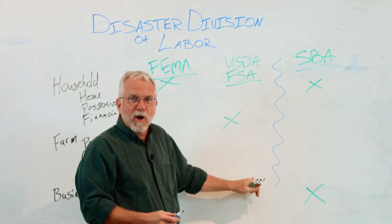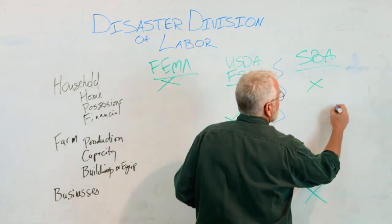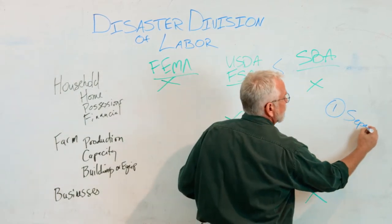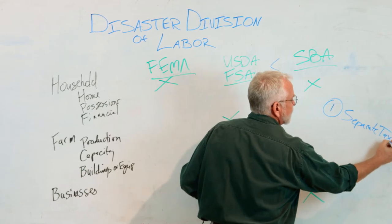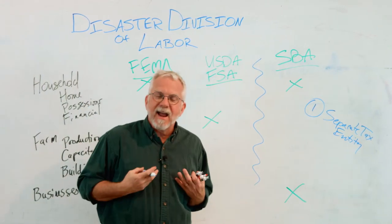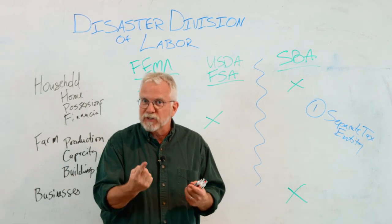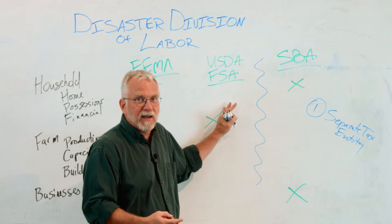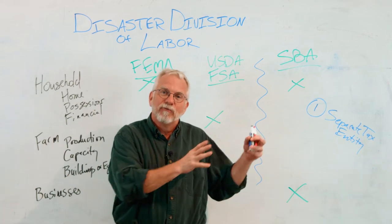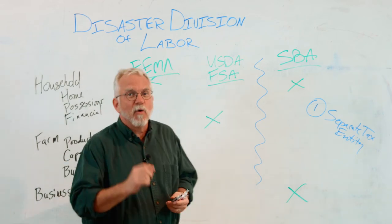There's a two-part process that determines where that line is drawn. The first part is: is it a separate tax entity? For instance, let's say I have a dairy and my daughter comes back to start up a cheese-making operation. The first question in terms of the line between SBA and FSA is: is that cheese-making operation a separate tax entity from the farm? If it's not, then it's part of the farm. If it is, then we go on to the second step.